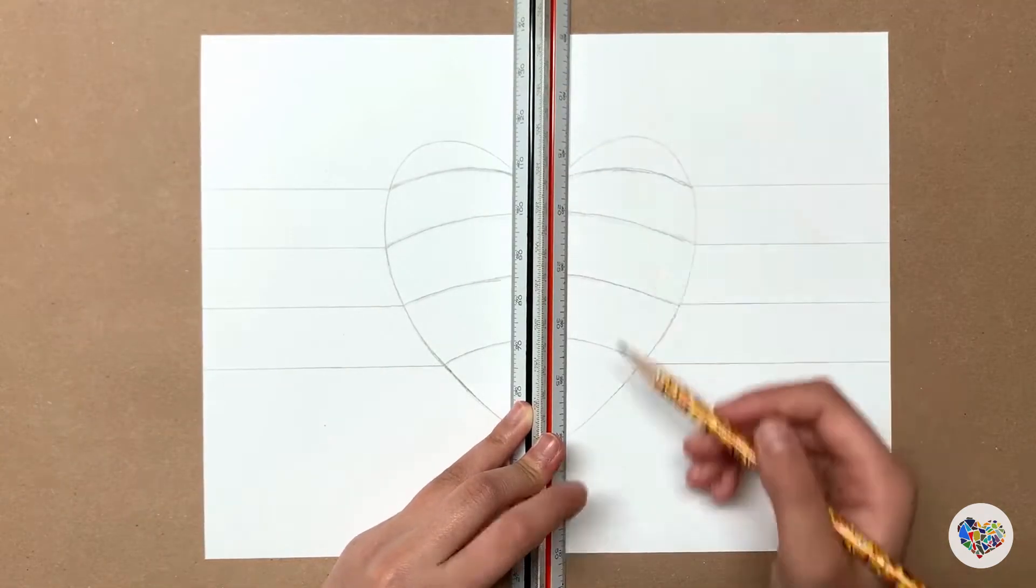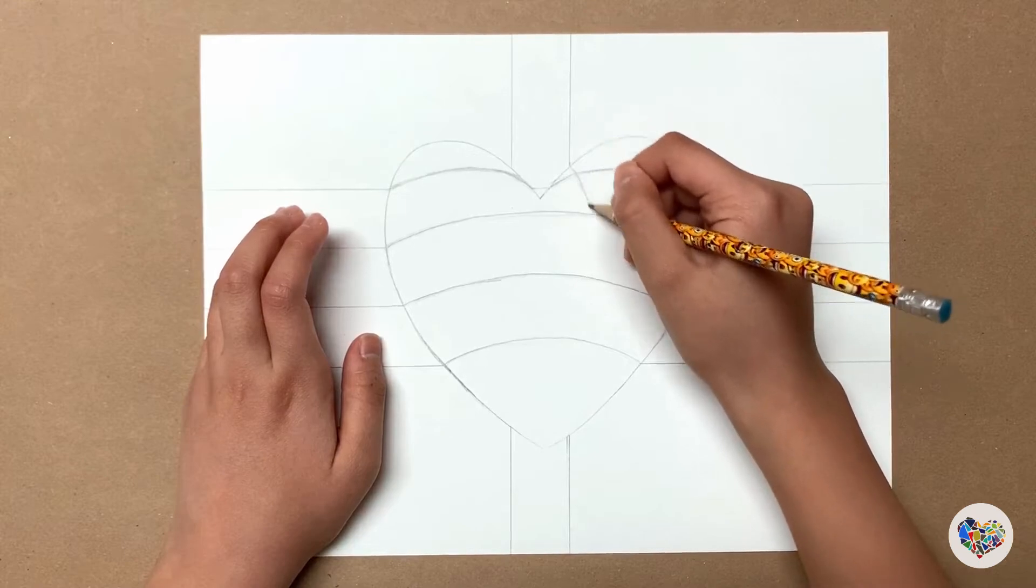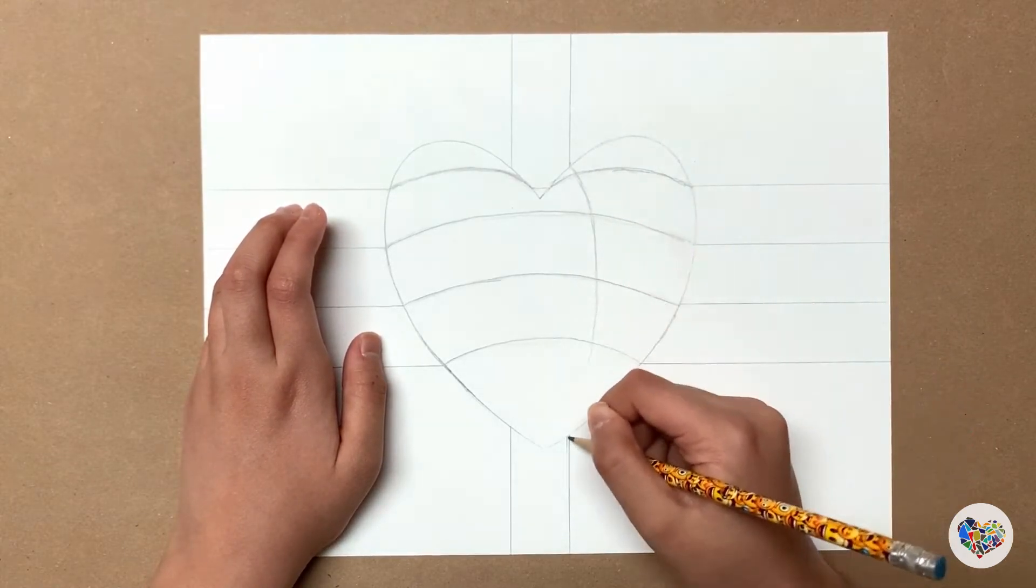Draw the same number of vertical lines on top and bottom of the heart, and draw curved lines inside of the heart like before.